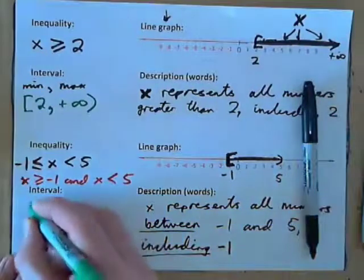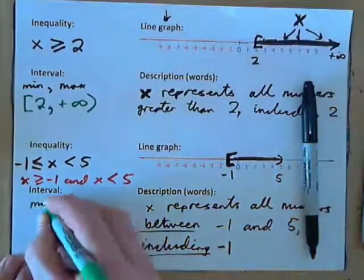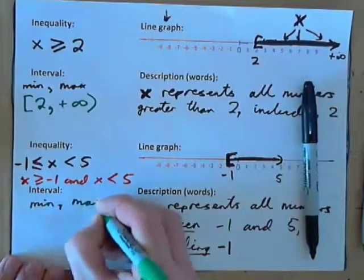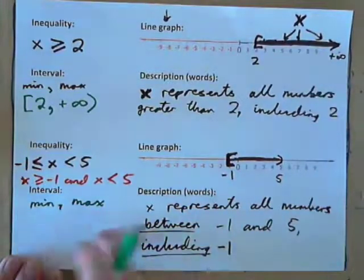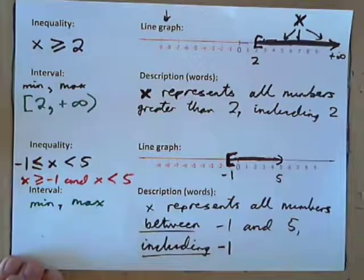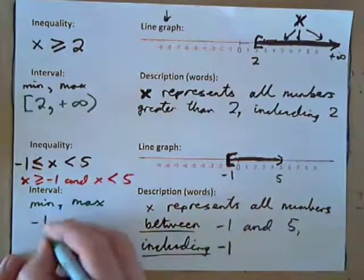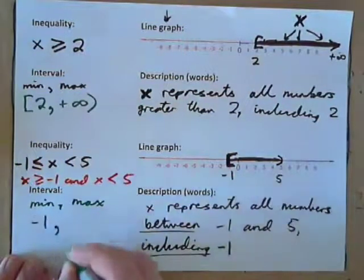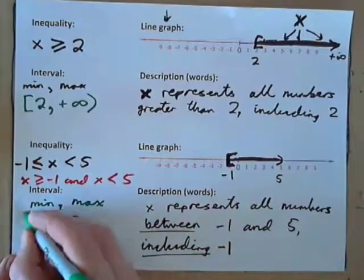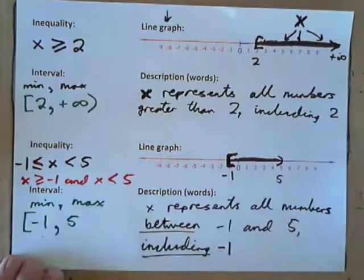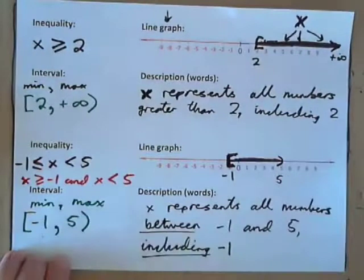As an interval, write min, comma, max. The minimum number in the set is negative 1, the maximum is 5. Negative 1 is included, so put a bracket; 5 is not included, so put parenthesis. The interval is [-1, 5).